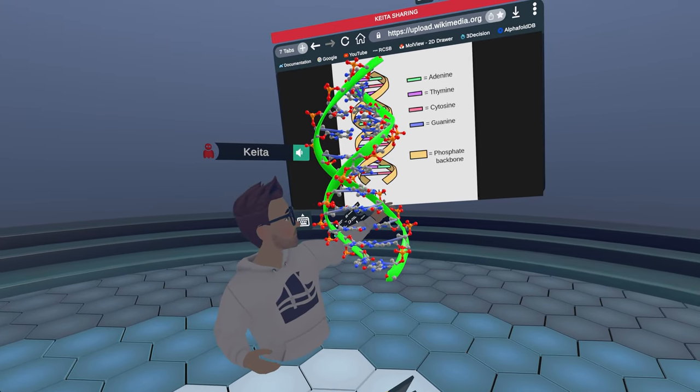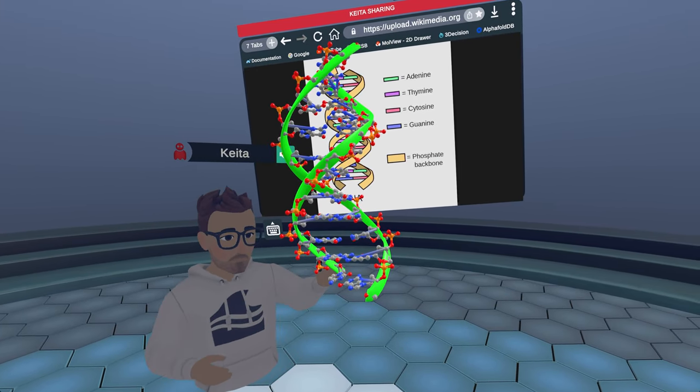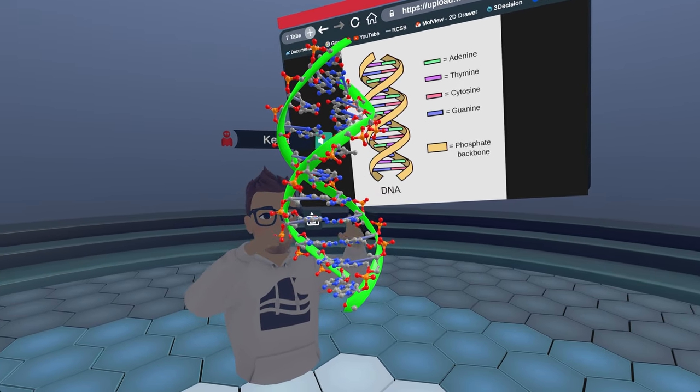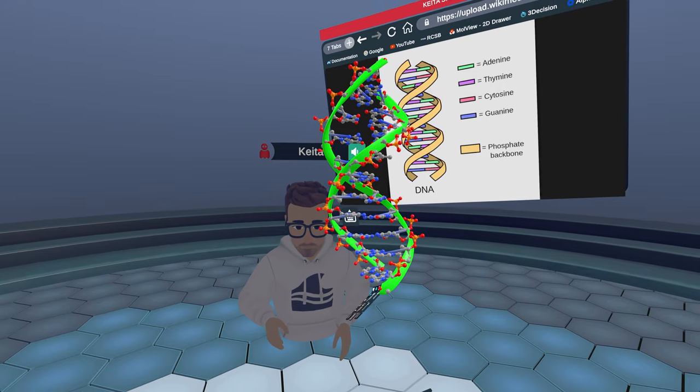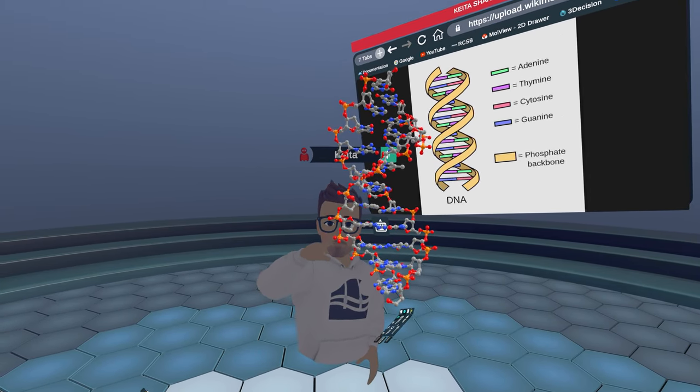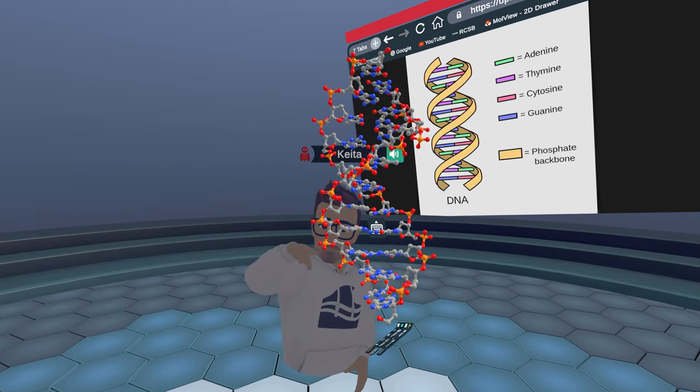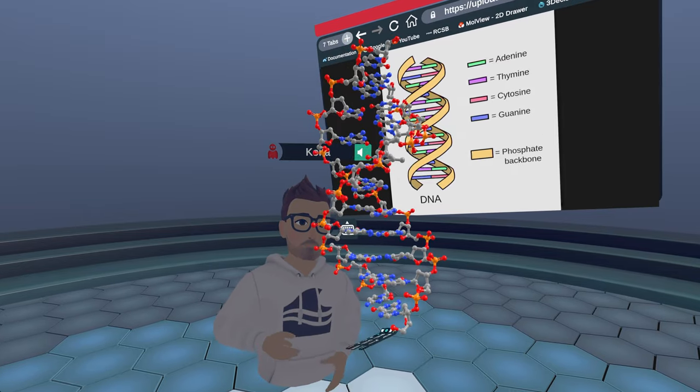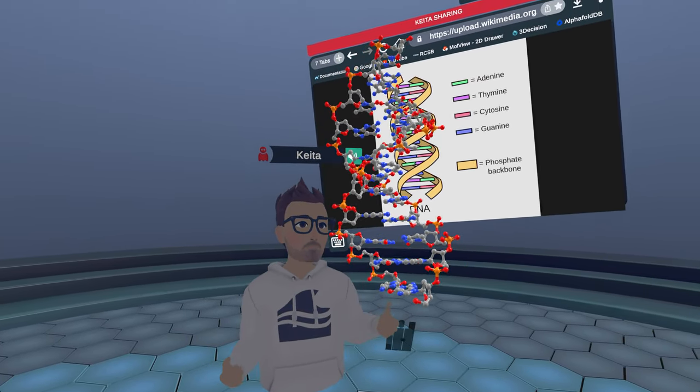And so the phosphate backbone that we talk about here, it's not just because of the backbone-like structure. It's also because of the fact that these orange atoms right here, these are actually phosphate atoms that are coupled with oxygen atoms, which are the red ones. And so that's actually what it means.